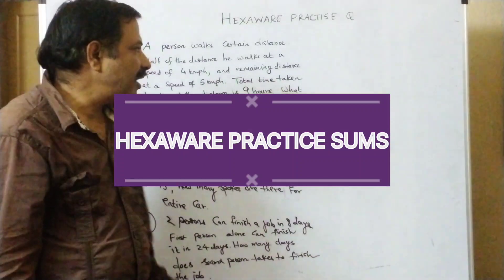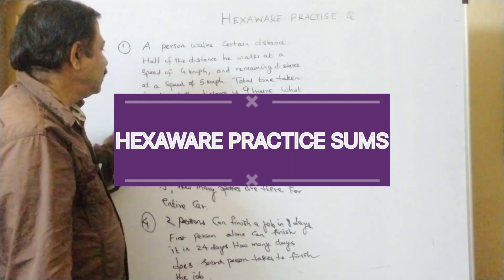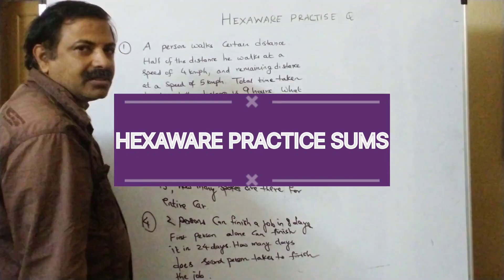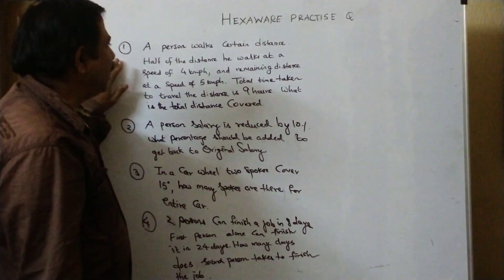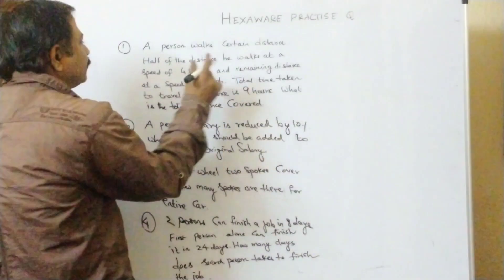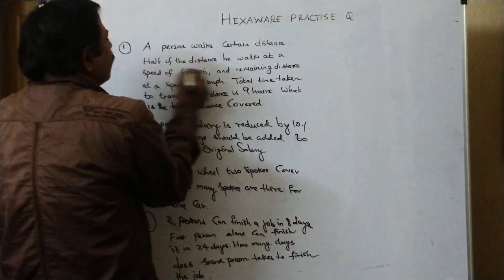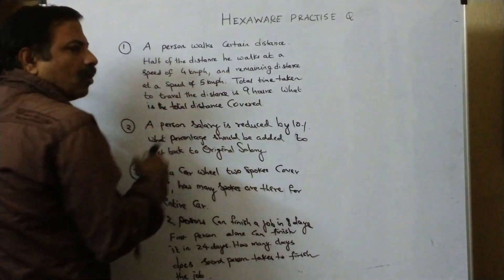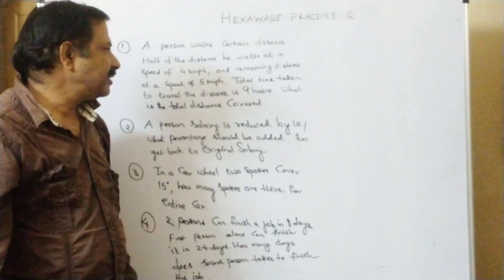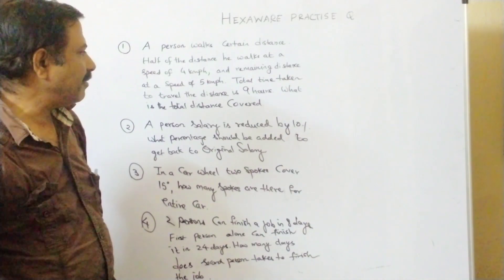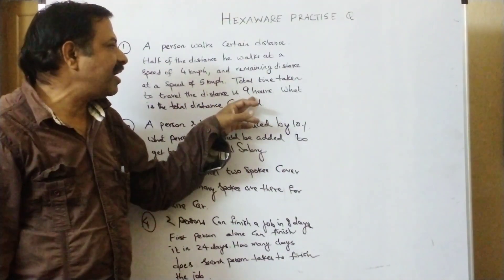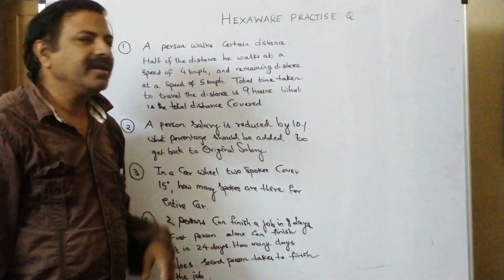The last video I have taken much time. It's okay. Exam questions. A person walks a certain distance. Half of the distance he walks at a speed of 4 km per hour and the remaining distance at a speed of 5 km per hour. The total time taken to travel the distance is 9 hours. What is the total distance covered?